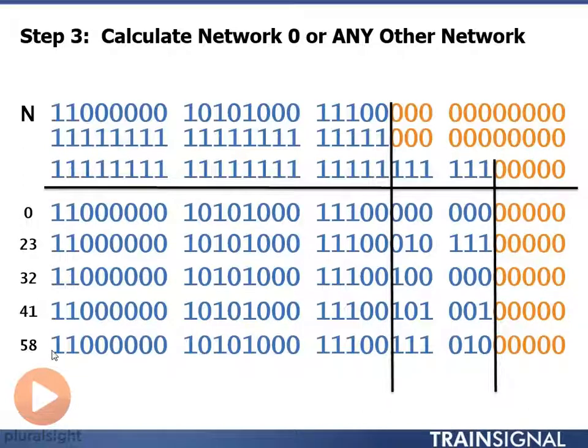Notice once again, in all 5 of these networks, the given portion of the address is identical, right? It has to be.